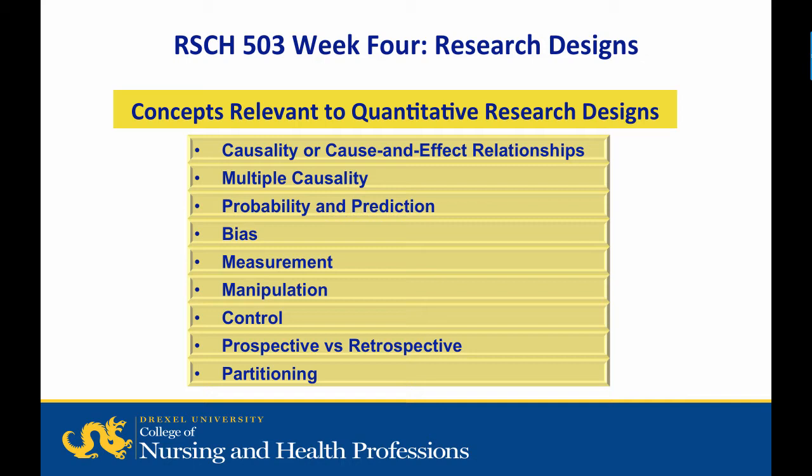The concepts relevant to quantitative research designs include: one, causality or cause-and-effect relationships; two, multiple causality — that is, two or more variables combined to cause an effect; three, probability and prediction — that is, prediction based on probabilities; and four, bias — identification and elimination of possible sources of bias prior to undertaking research.